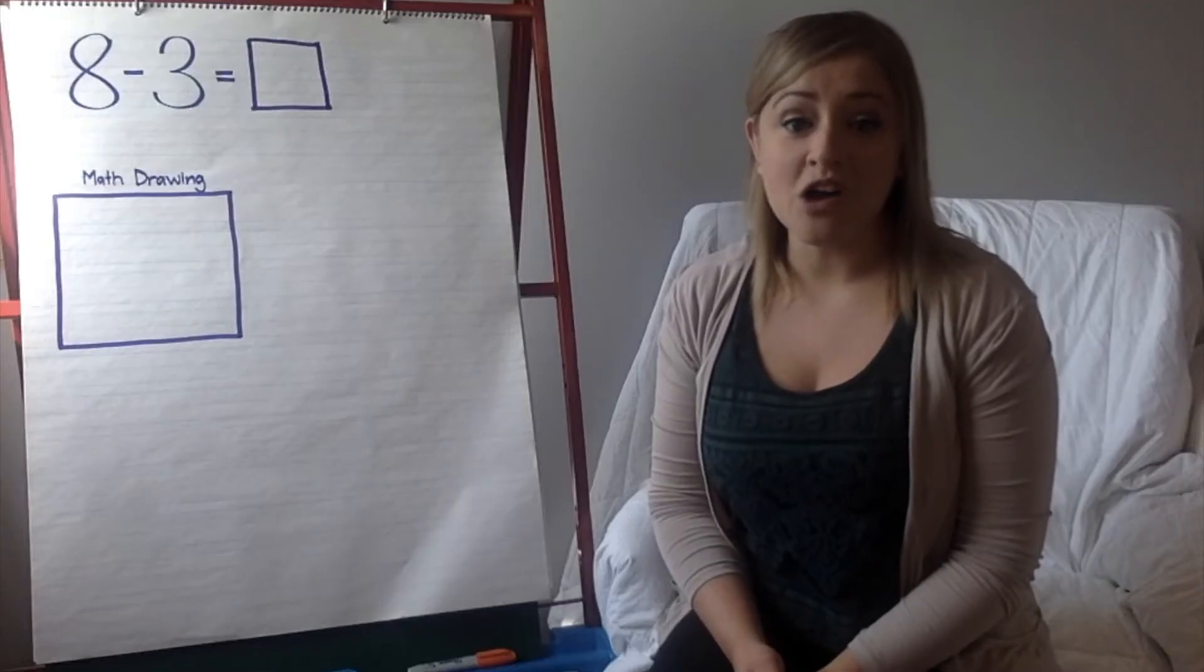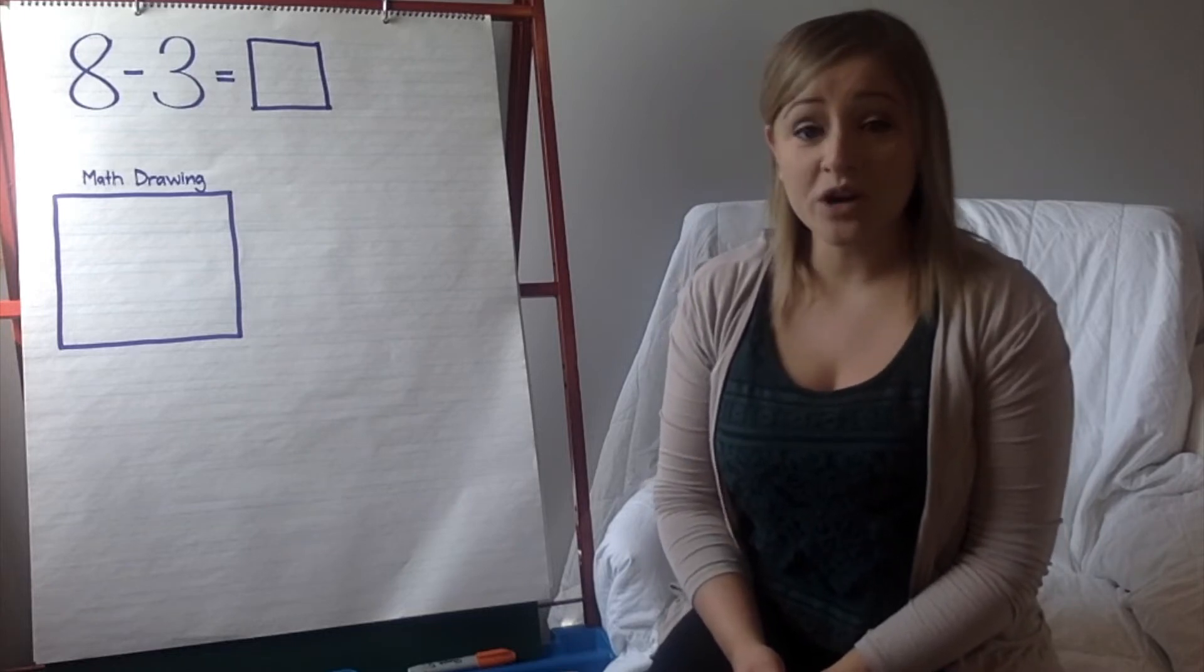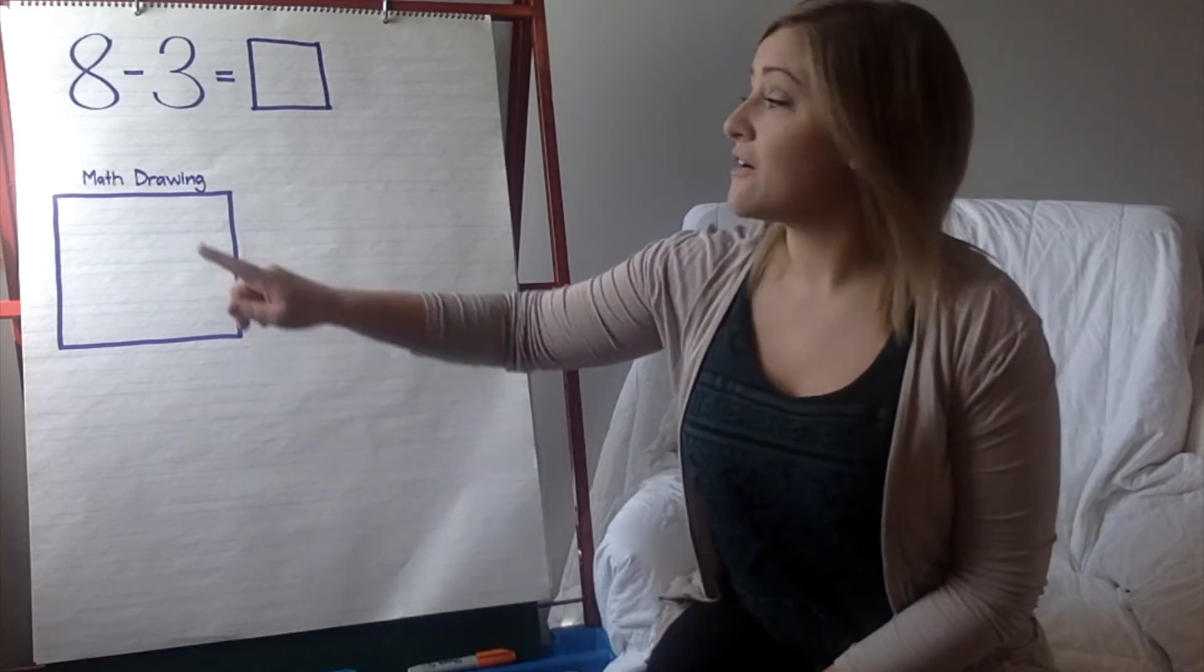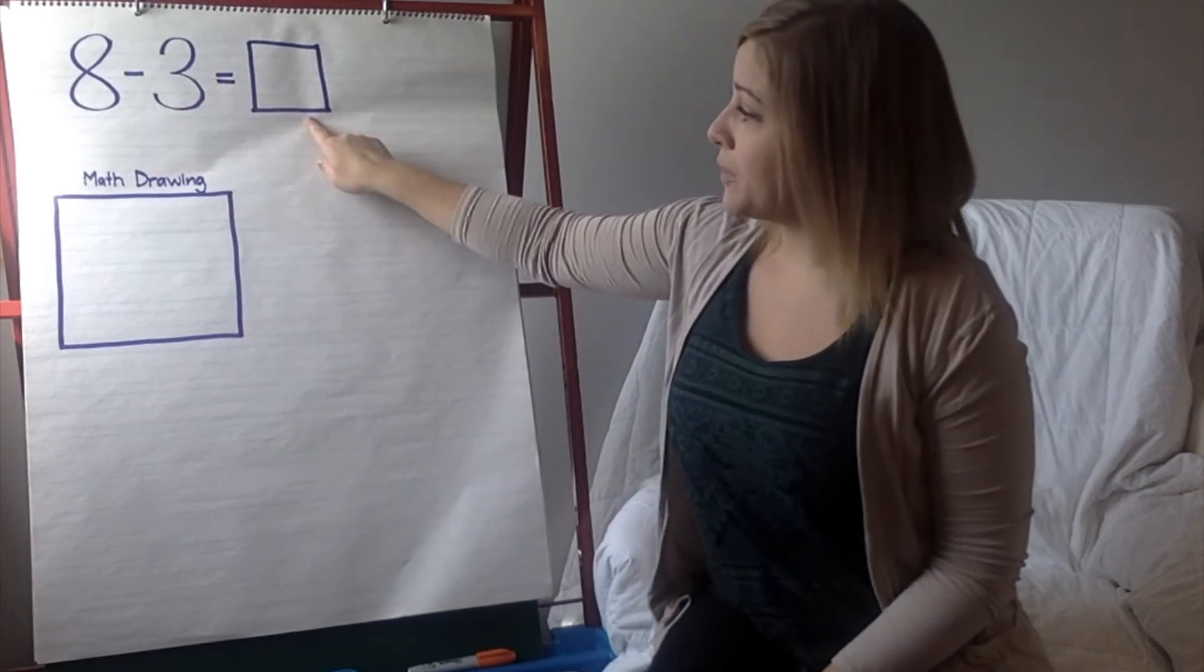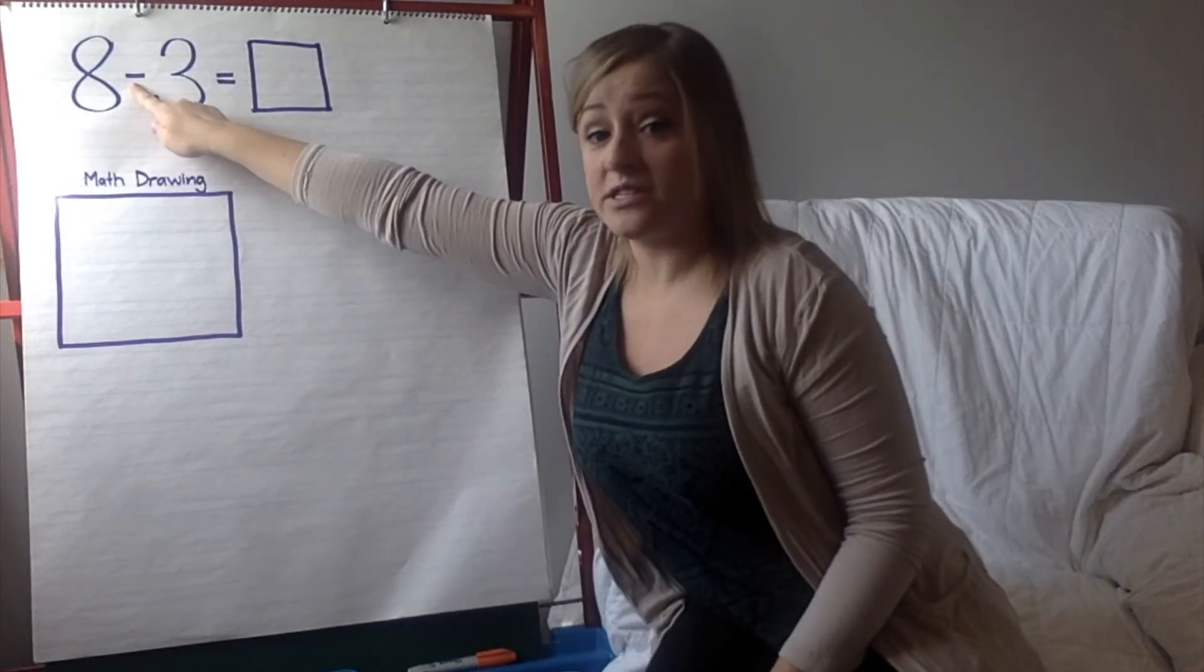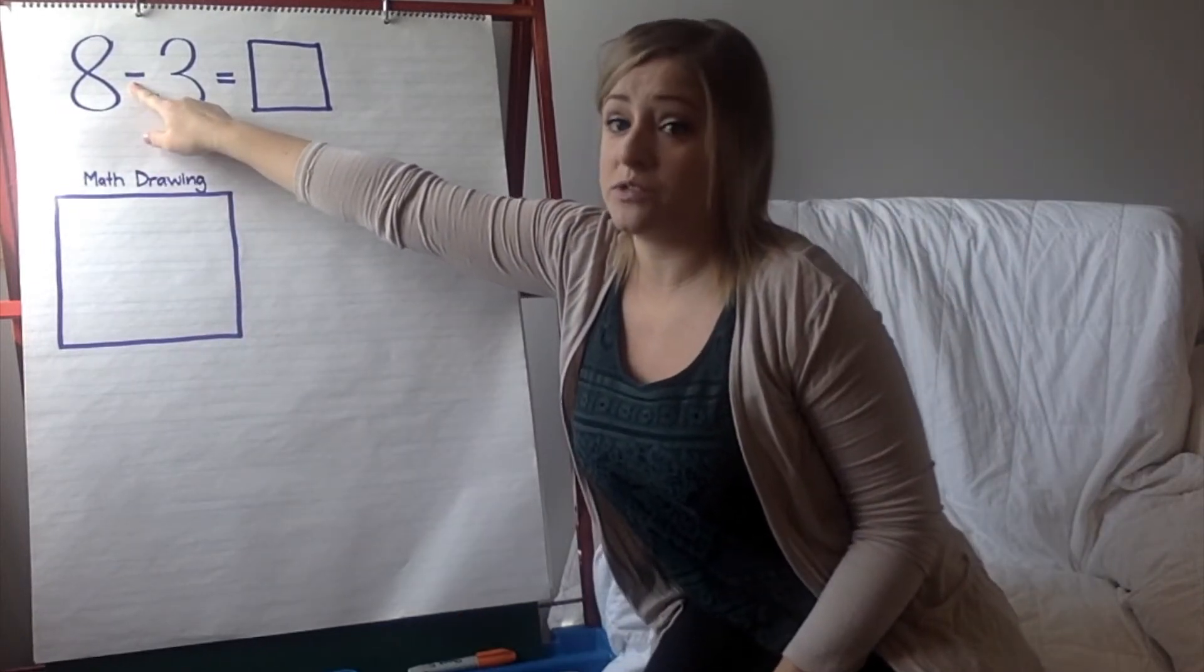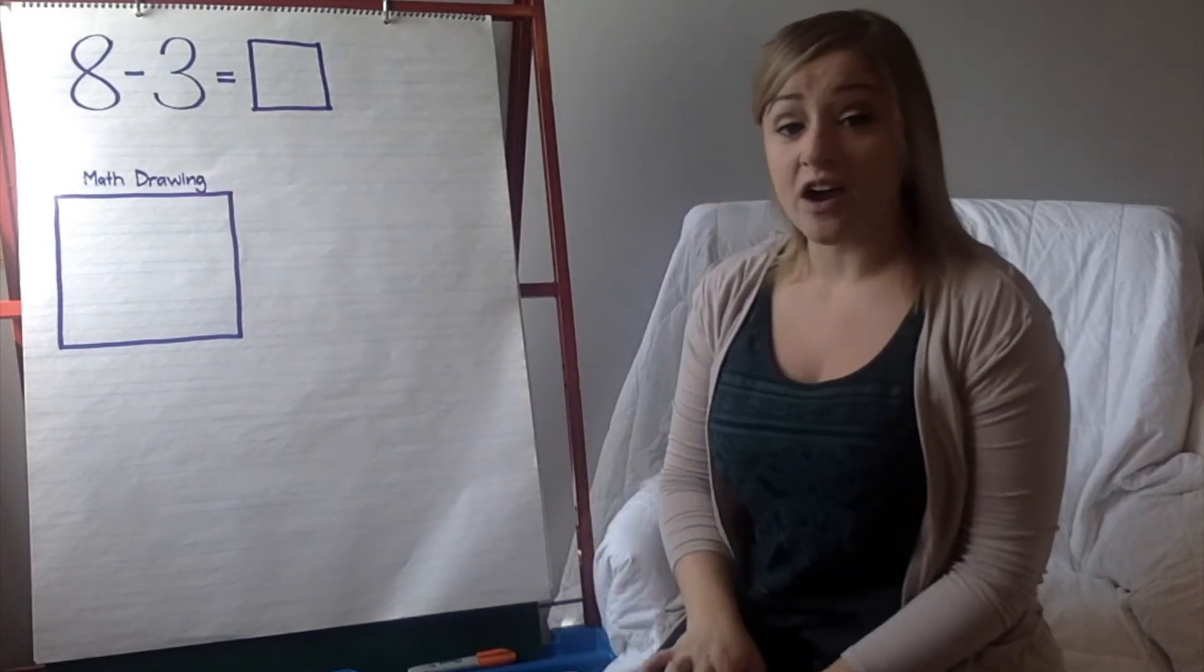Now that you've solved 6 take away 2 equals 4 using your math manipulatives, we're going to go on to another math problem. Here we have 8 minus 3 equals blank. We know that we're subtracting because we saw that minus sign, or the dash between the numbers, which means we're subtracting. So, we are starting with 8, and we're taking 3 away to find our answer.